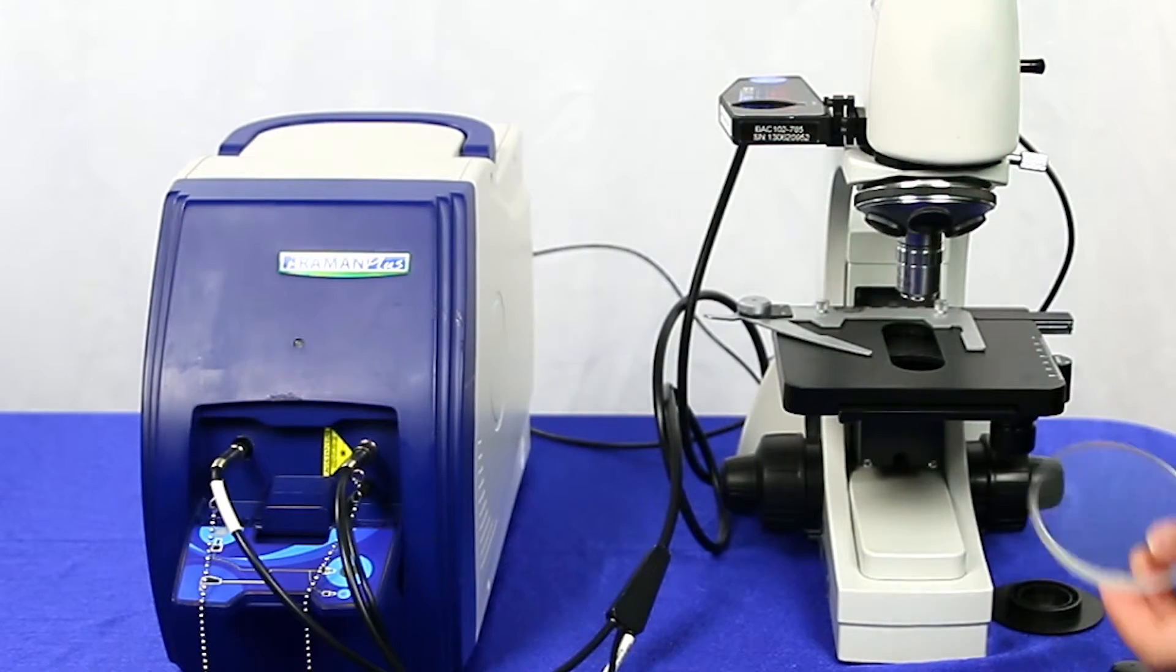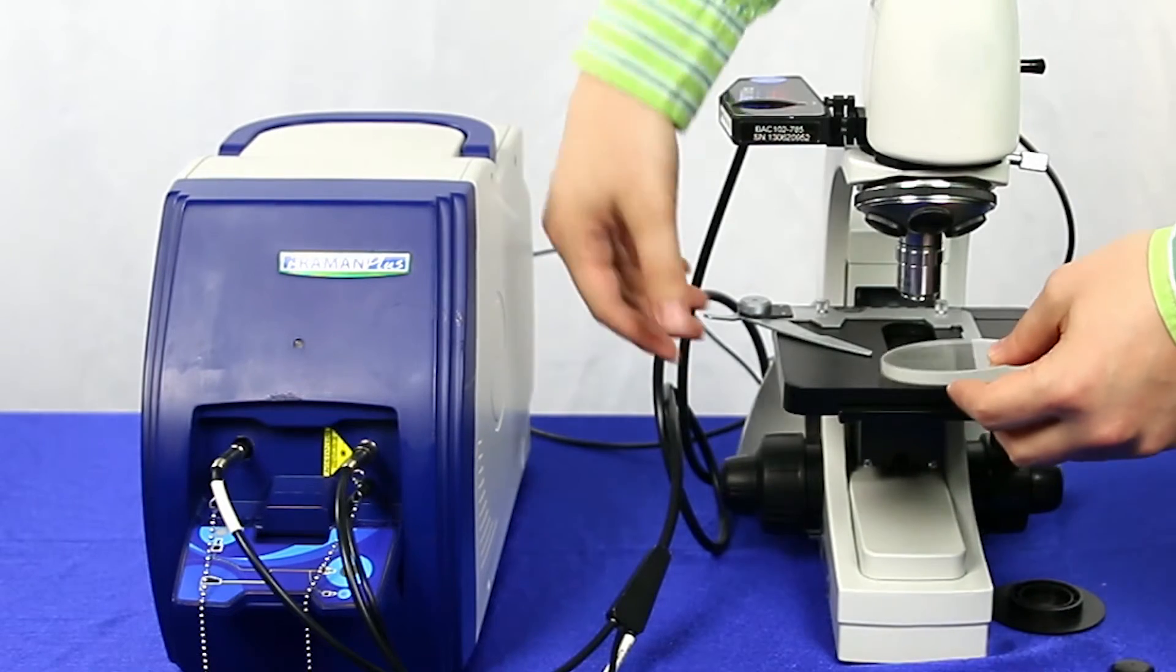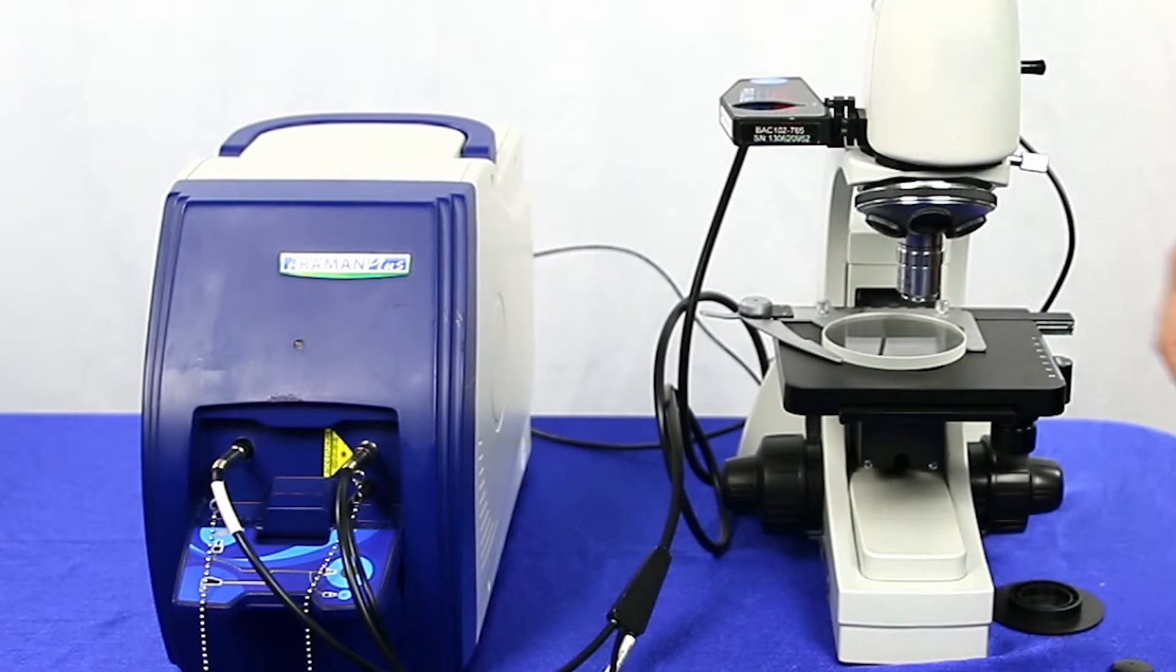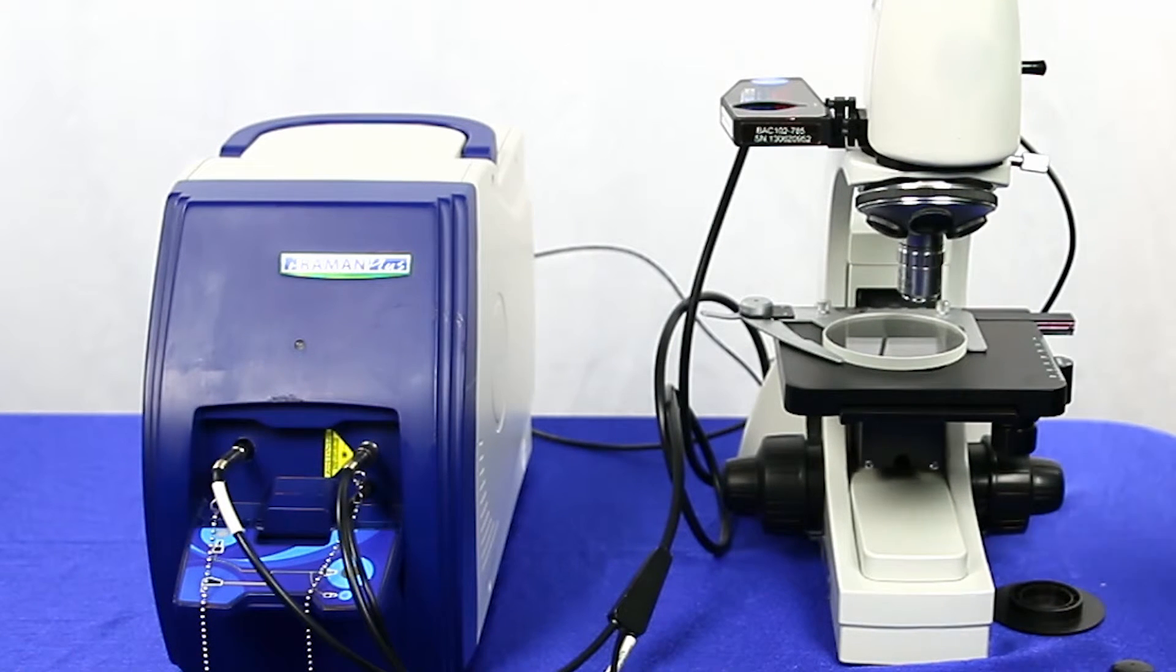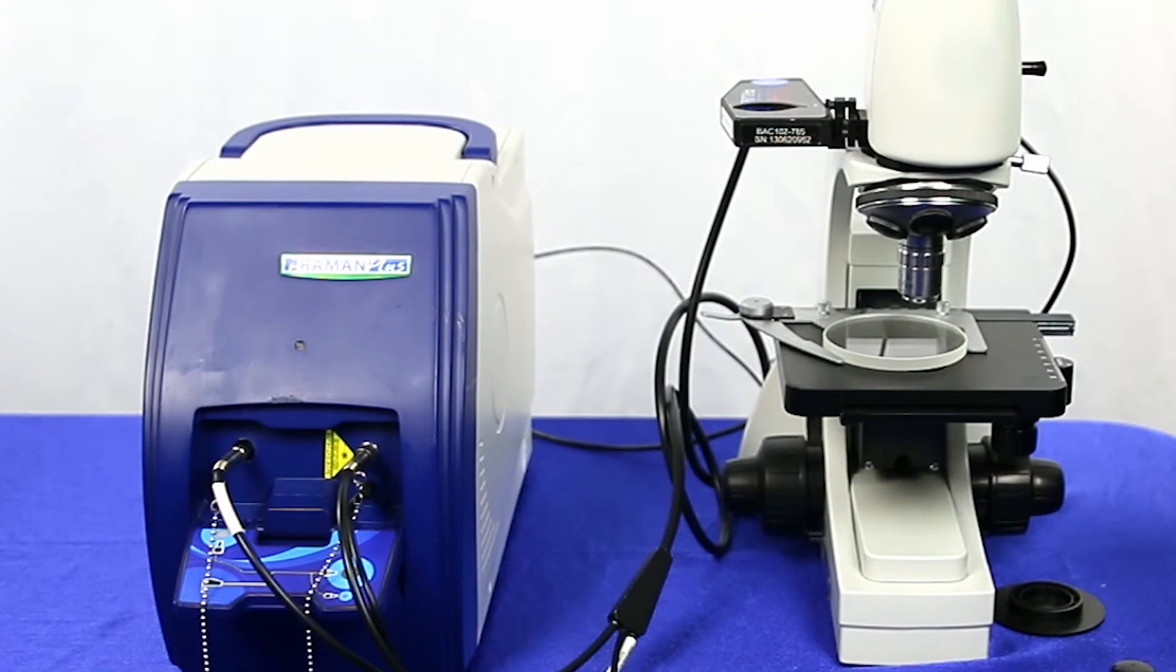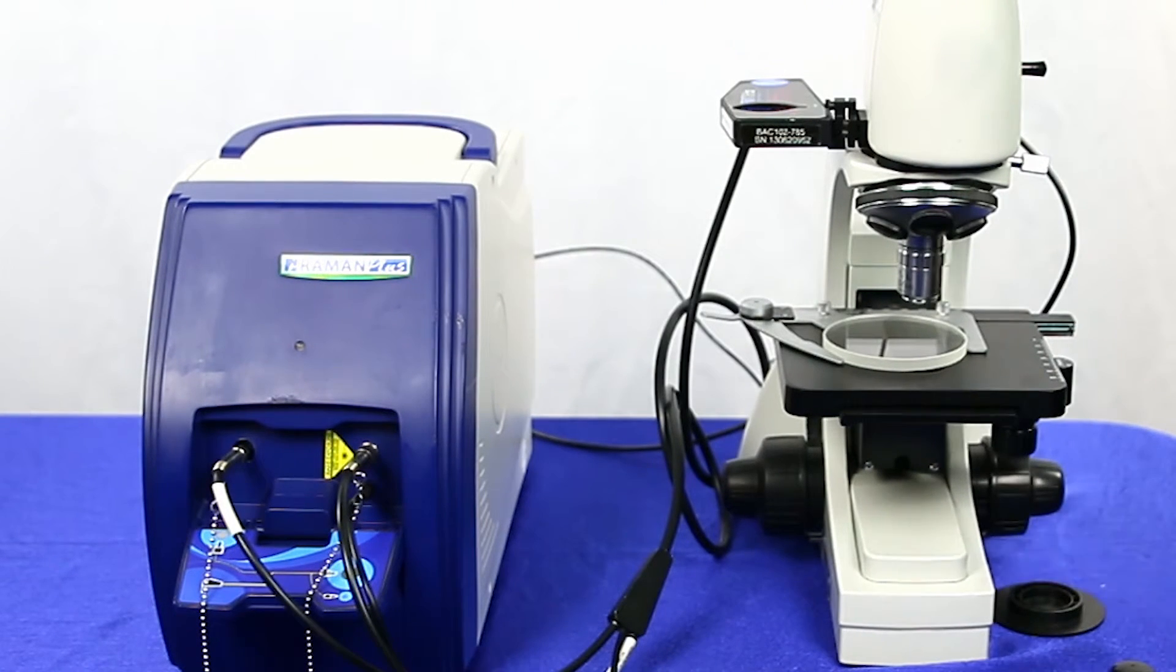You'll also want to put on your sampling stage, your glass plate for your samples. That is how you set up a BAC-151B. We will also have another video to detail how you connect it with your computer. Thank you.